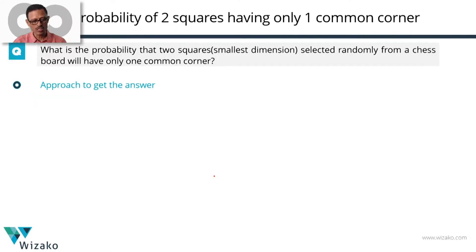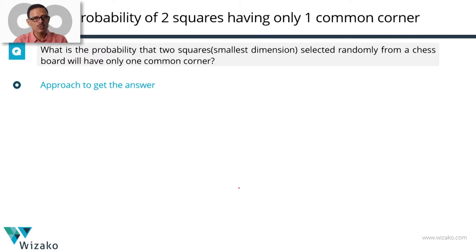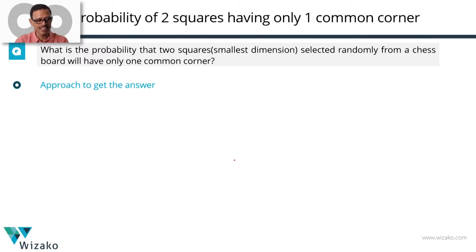This is a probability question. To solve any probability question and find the probability, we need two things: we need the denominator and we need the numerator. For any question, keep this in mind — the denominator counts the total number of ways that event can happen. The event in this question is selecting two smallest dimension squares from a chessboard. The numerator counts the favorable number of events — we need to select two such squares that have only one common corner.